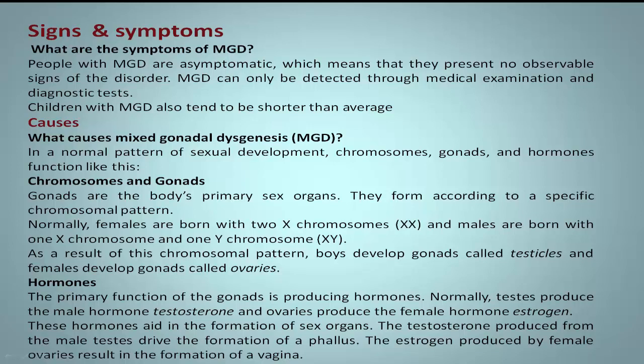Gonads are the body's primary sex organs. They form according to a specific chromosomal pattern. Normally, females are born with two X chromosomes (XX).